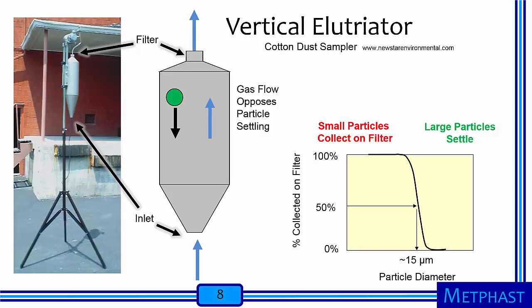A vertical elutriator is a device that relies on gravity settling. It is used in cotton dust sampling to remove large cotton particles with no health relevance, approximately 15 micrometers in size, before particles are collected onto a filter. Only those particles with a settling velocity less than the upward movement of air can reach the filter. Thus, particles smaller than 15 micrometers collect on the filter with high efficiency, whereas larger particles fall out of the device and have low collection efficiency.